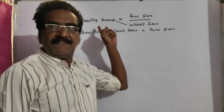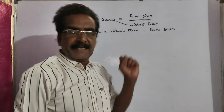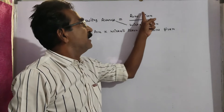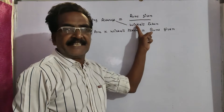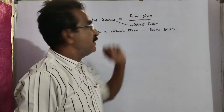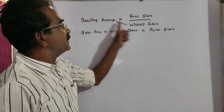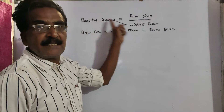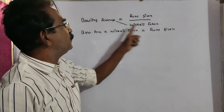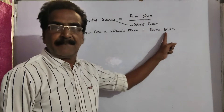First, one thing friends — bowling average is given by runs divided by wickets. So it implies bowling average multiplied by wickets is equal to runs given by him.